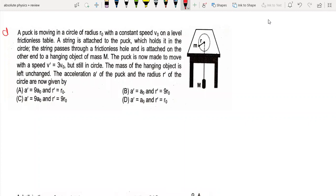Hello everyone, this lecture's question is: a puck is moving in a circle of radius R0 with a constant speed V0 on a level frictionless table. The string is attached to the puck which holds it in the circle.